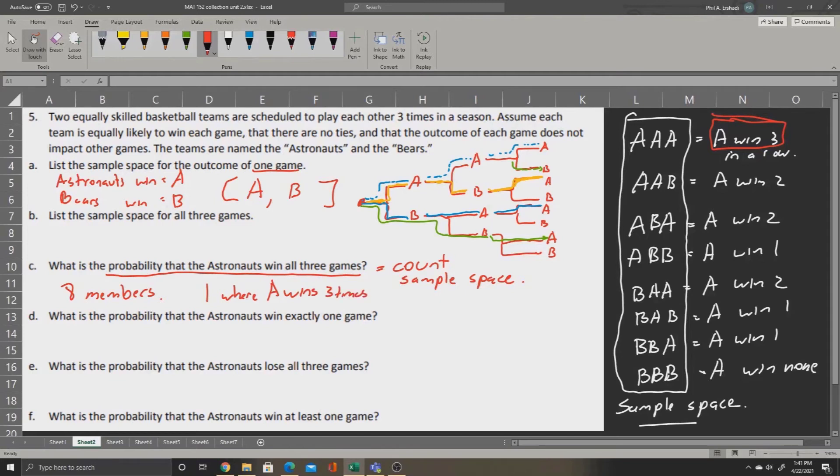And so to calculate the probability, we can take the correct parts, that is the parts that match the problem, divided by the total number of members in the sample space. So we can say there is one match over eight members in the space. That means our probability is one-eighth.